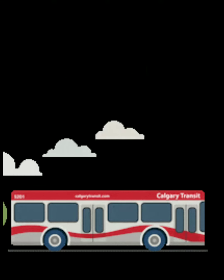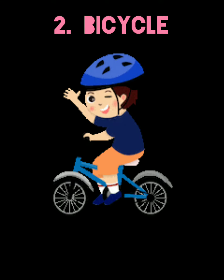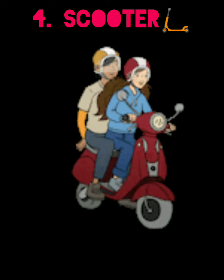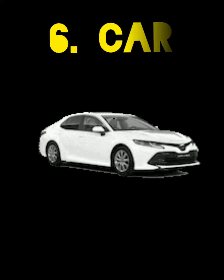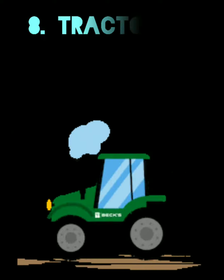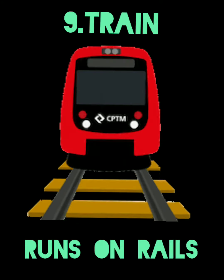For example: bus, bicycle, van, scooter, jeep, car, horse cart, tractor. Train runs on special tracks called rail.